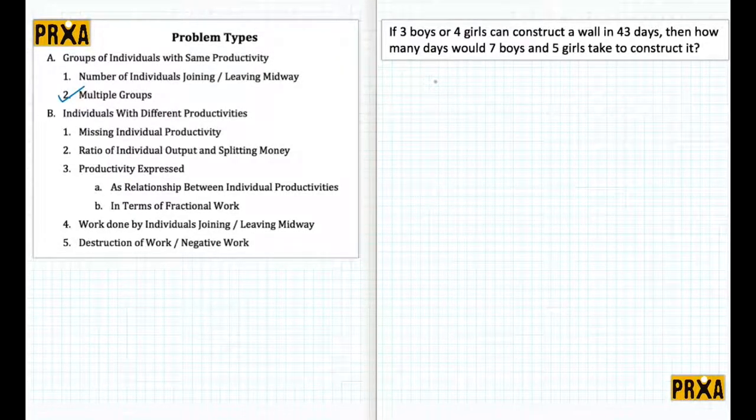So far the kind of problems we've seen is we would have either a number of boys doing the job or we would have a number of girls doing the job, and the question would be asked on how many boys or how many girls. But here you would notice that it is given that the wall is constructed either by three boys in 43 days or by four girls in 43 days, and the question which is asked is how many days would it take seven boys and five girls to construct it. So the important thing here is to notice the difference between the questions we have been doing so far and this particular question where there are two groups of people.